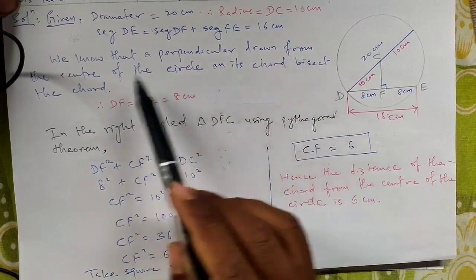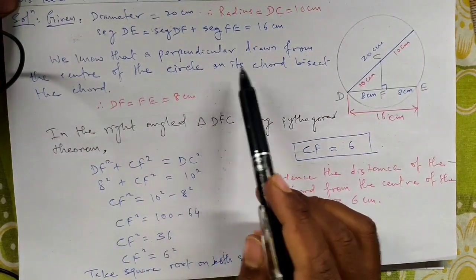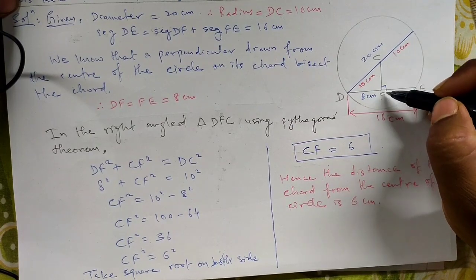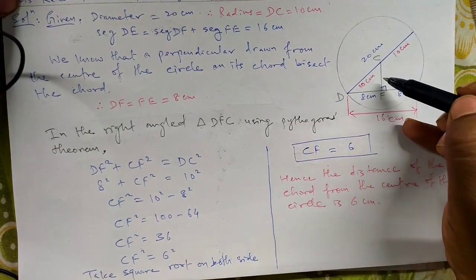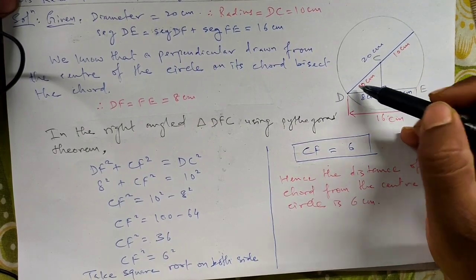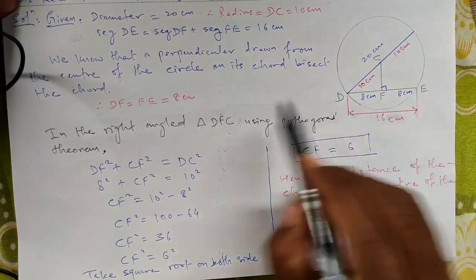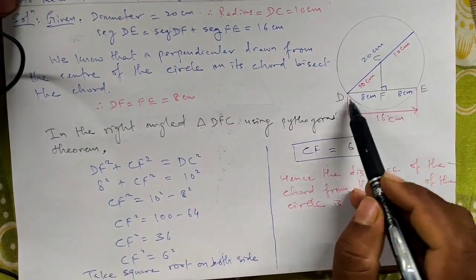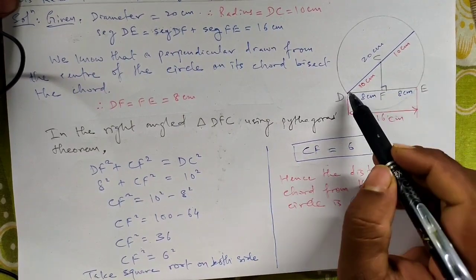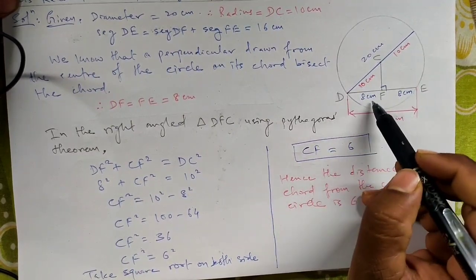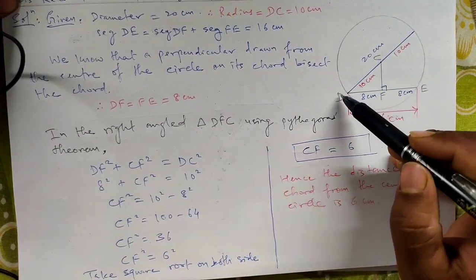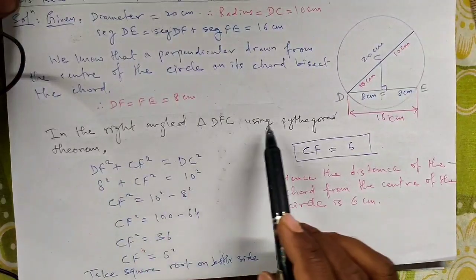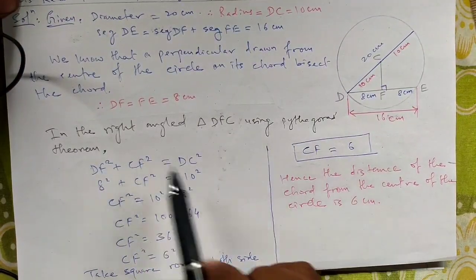We note that the perpendicular drawn from the center of a circle to its chord bisects the chord. So therefore, DF is equal to FE is equal to 8 cm. Since DF equals 8 cm, we apply the Pythagorean theorem to the right angle triangle DFC.